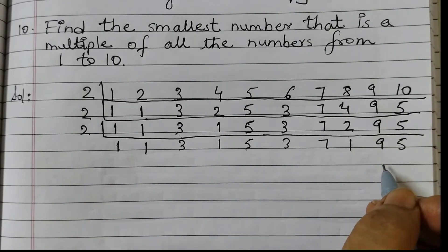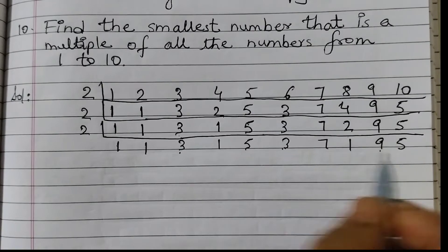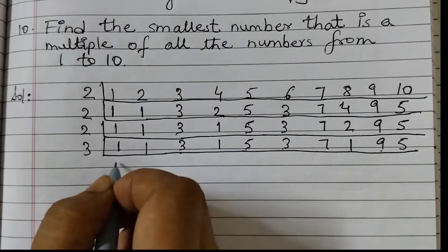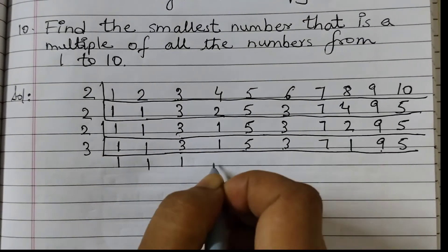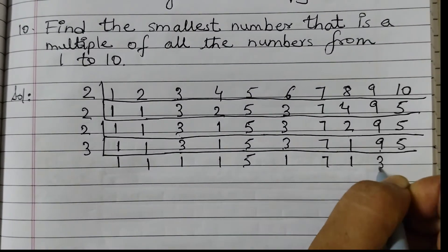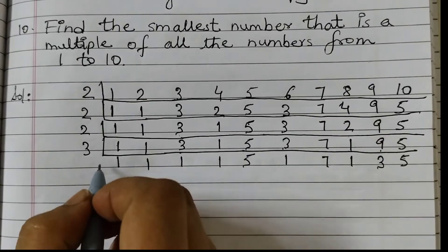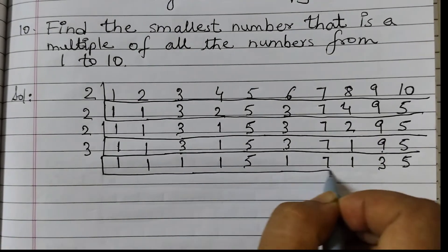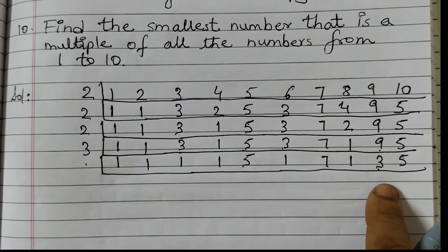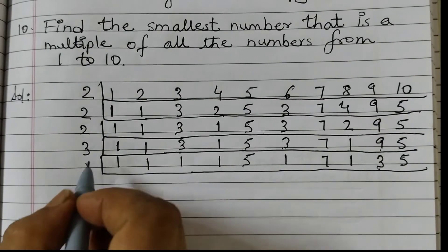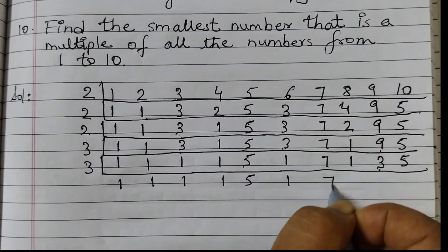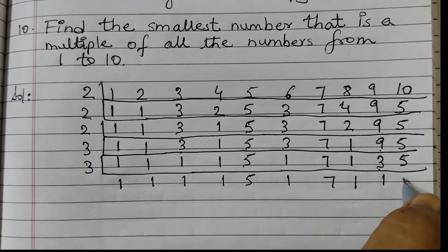Now there are no more multiples of 2. We have 3 here now, 3 and 9. So we will divide by 3 now. 1, 1, 3 1's are 3, 1, 5, 3 1's are 3, 7, 1, 3 3's are 9, 5. 3 is there, right? So even if 1 number is there we can divide it. So 3, 1, 1, 1, 1, 1, 5, 1, 7, 1, 3 1's are 3 and 5.